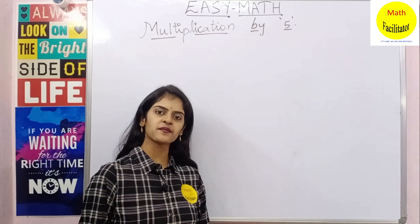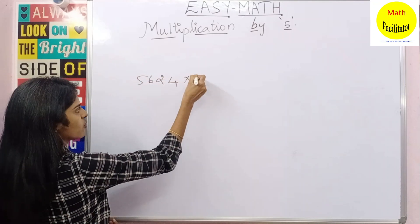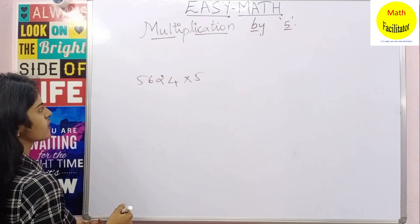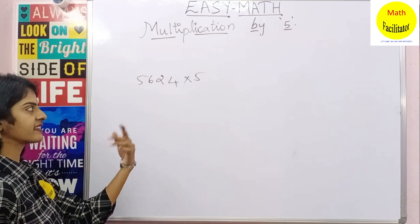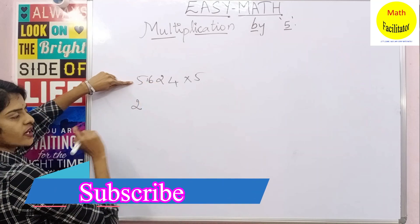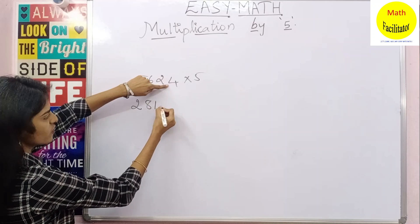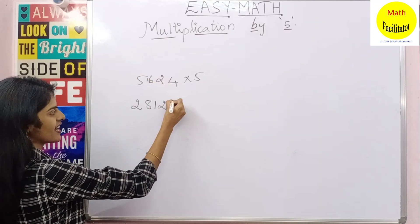Now let us take a bigger number, say 5624 into 5. So directly you will divide this by 2. So 2 times 2 is 4, you will be left out with 1. This is 16, 2 times 8 is 16, 2 times 1 is 2, 2 times 2 is 4, and you add a 0. How simple it is!